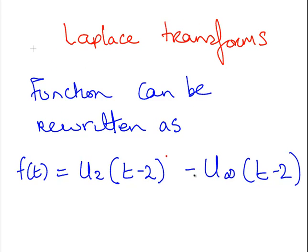The function can be rewritten as u of 2 times t minus 2 minus u of infinity times t minus 2. And, as we said earlier, that u of infinity means that whole thing there can go to zero. So essentially we're just left with this part over here, u of 2 times t minus 2.